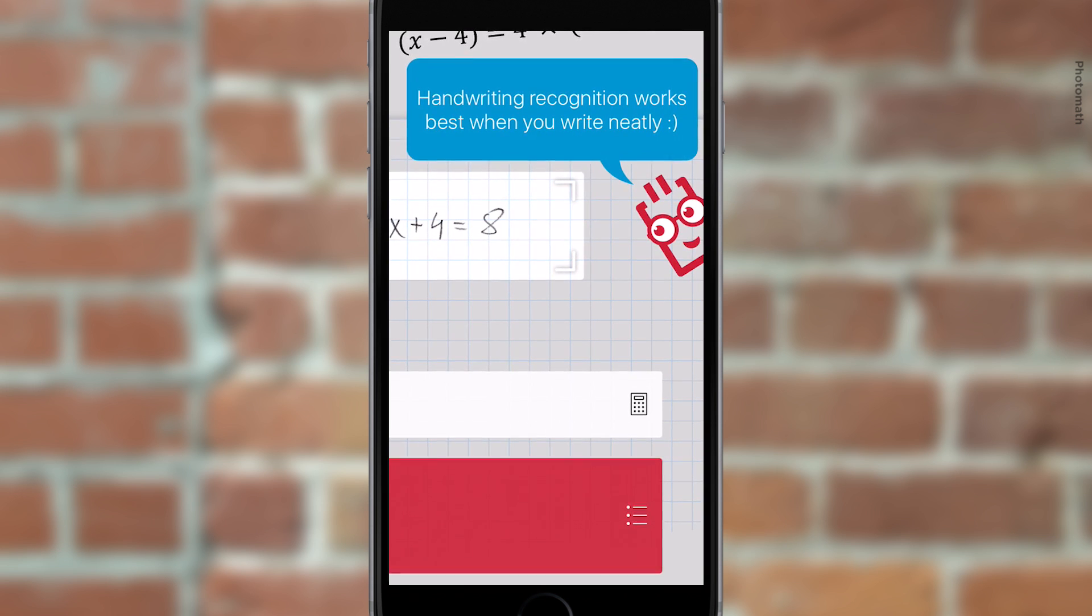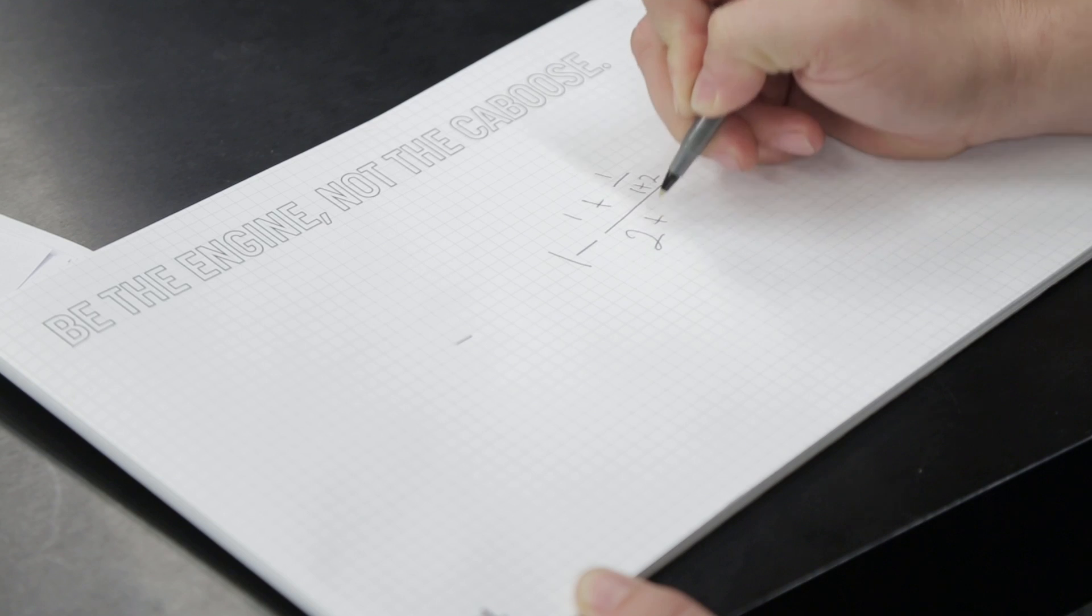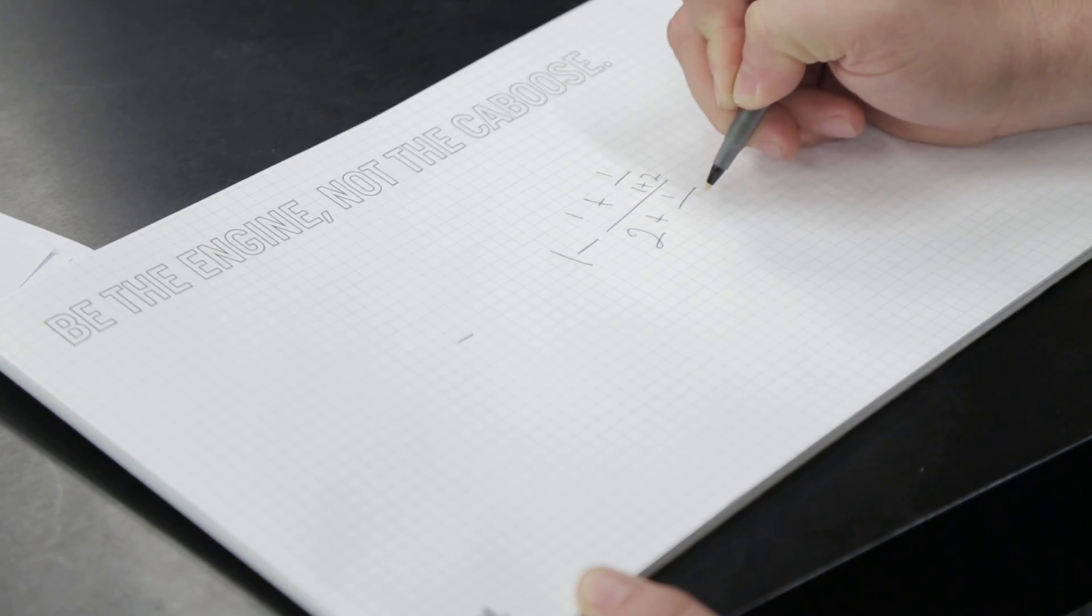This week, Photomath released an update that recognizes handwriting. Previously, the app was only able to read printed text.